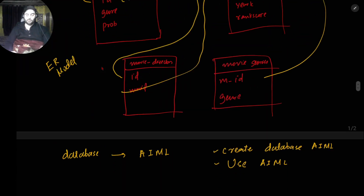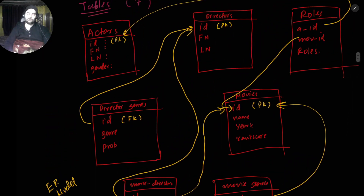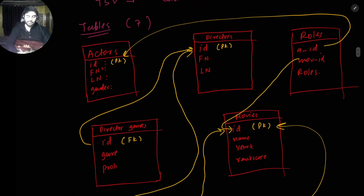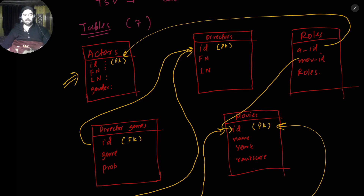Now going back to the coding window. We have the data, we've done the ER modeling. The next step is we want to create all seven tables first, then insert the data — according to this schema. Keep the relationships in mind: the actors table is related to roles, and the directors table is connected to movie_directors via director_id. Keep these foreign keys in mind.